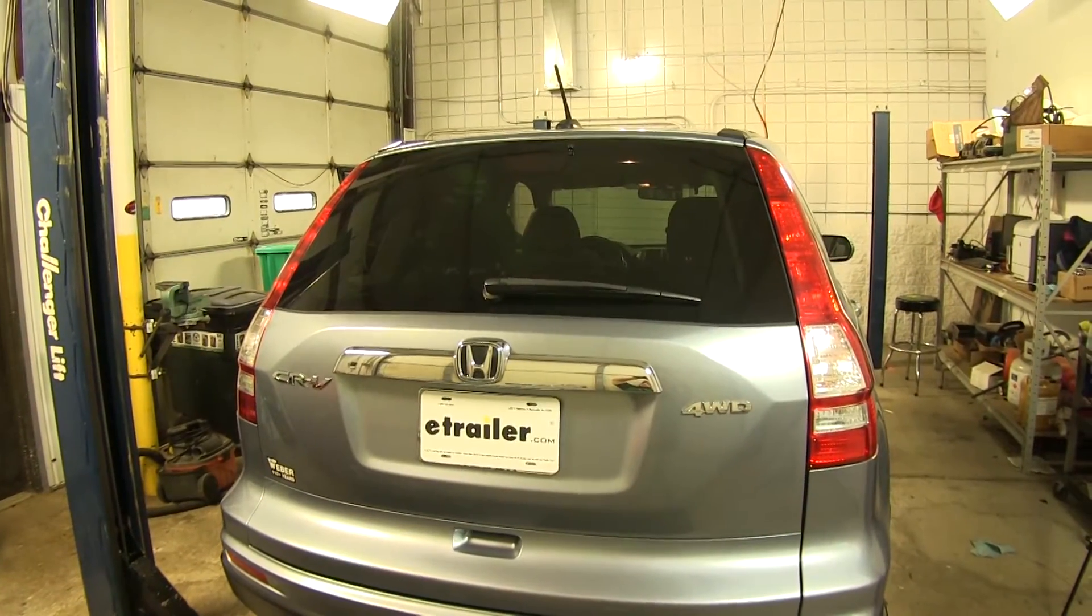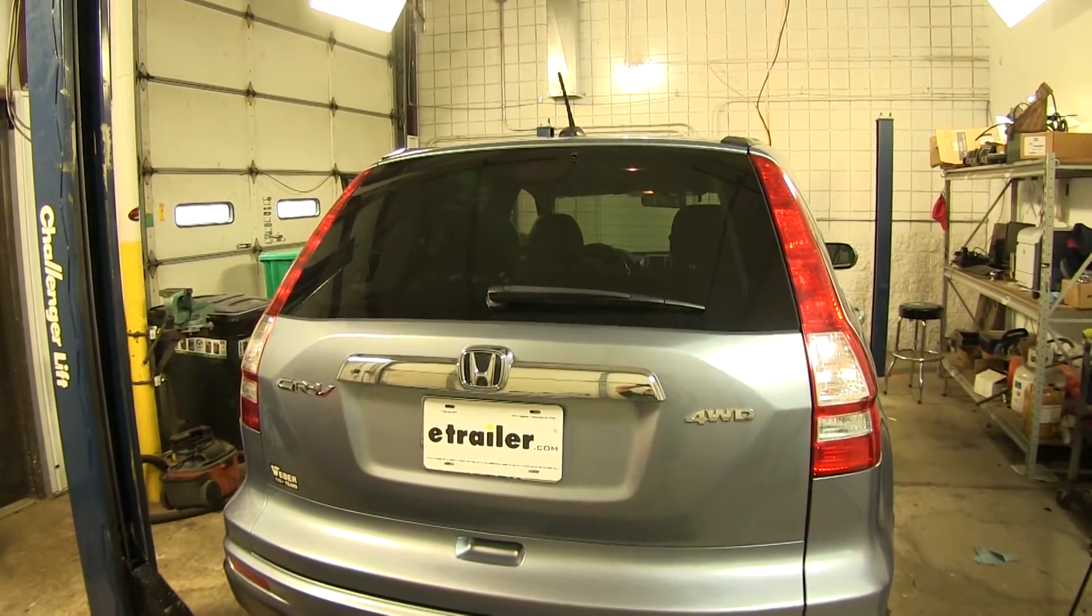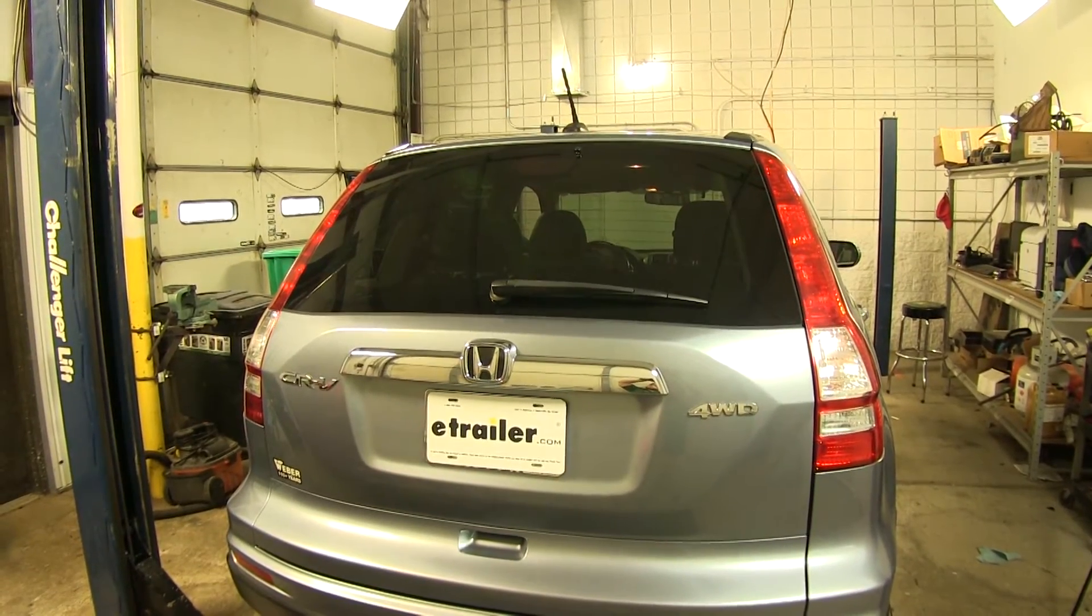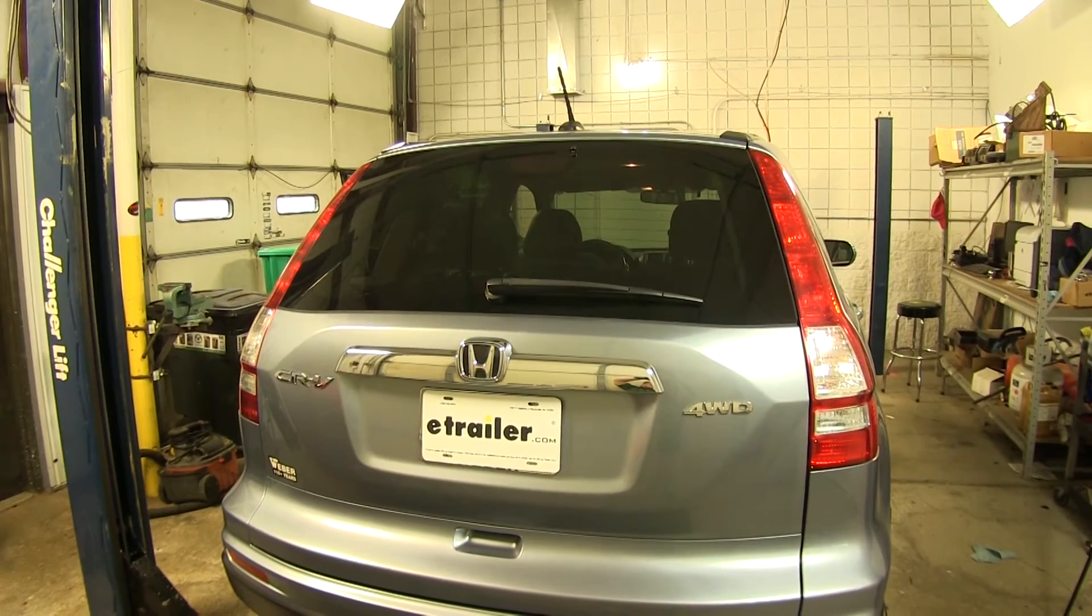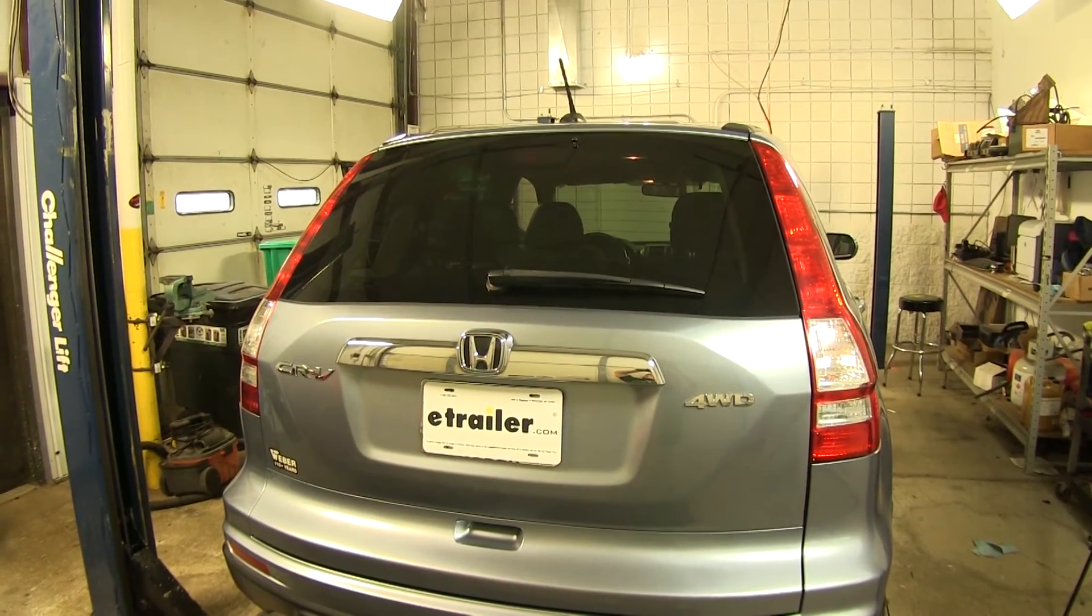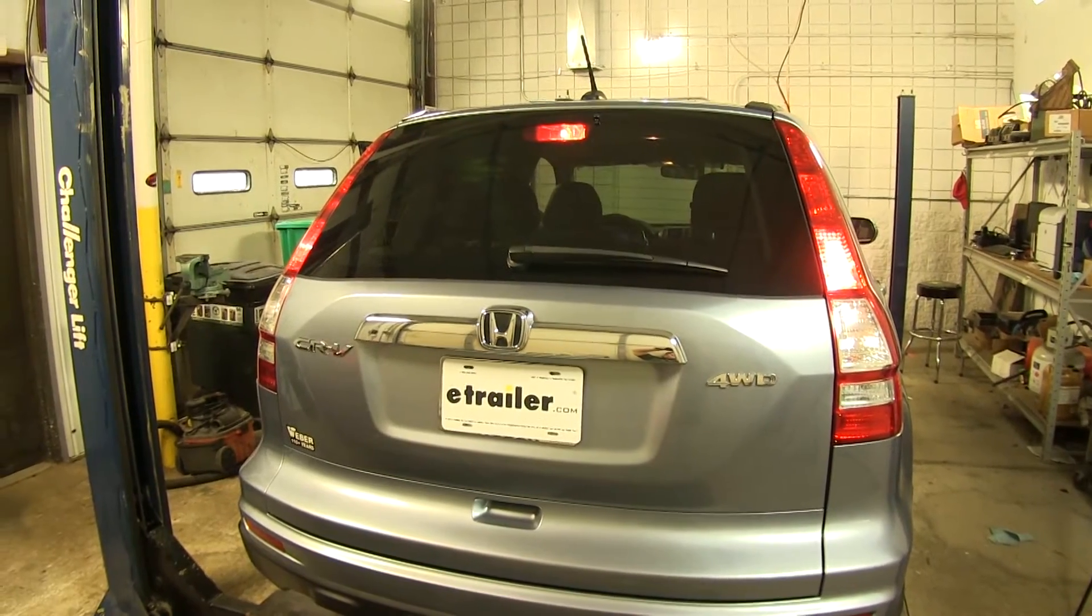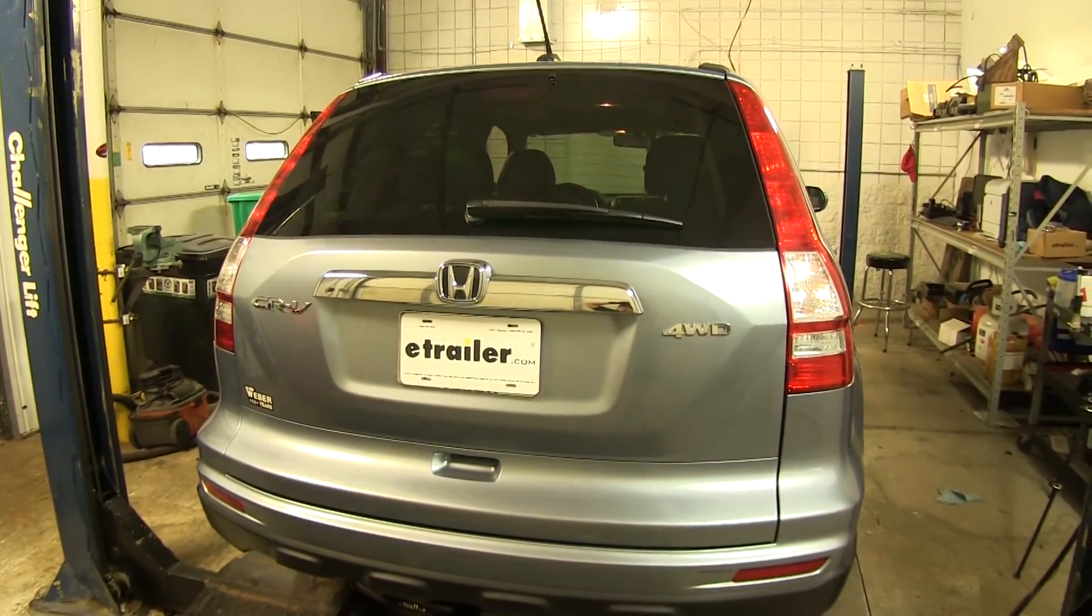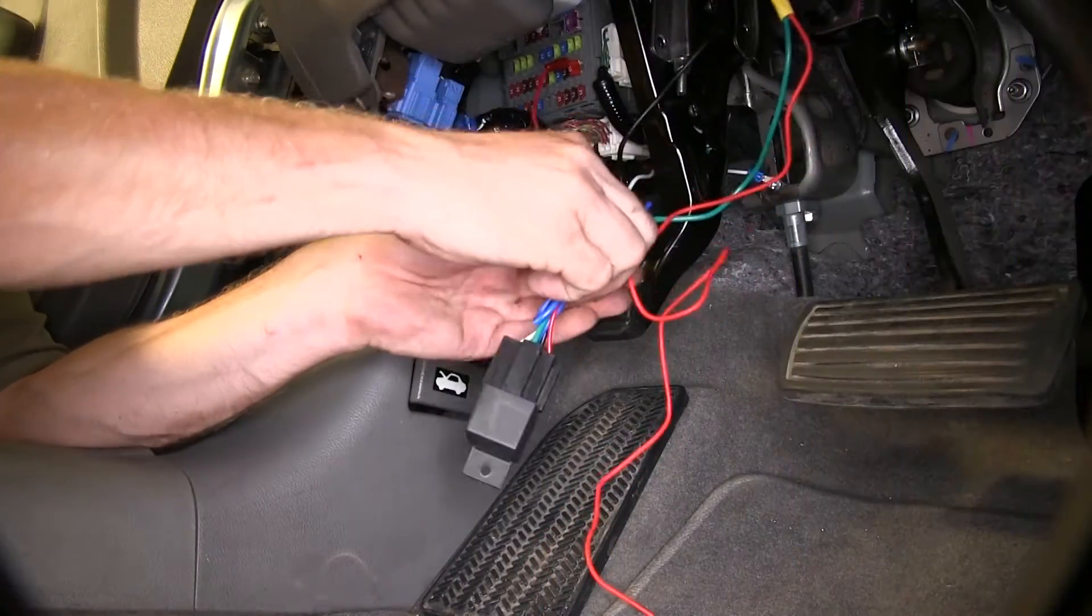Now with the key in out or off position, we shouldn't have the brake lights come on when we hit the brake pedal. Now with the vehicle in tow mode, we still shouldn't have any brake signal. Now we're driving the vehicle normally. With the key in the on position, now we have our brake light signal driving normally. Everything's working.